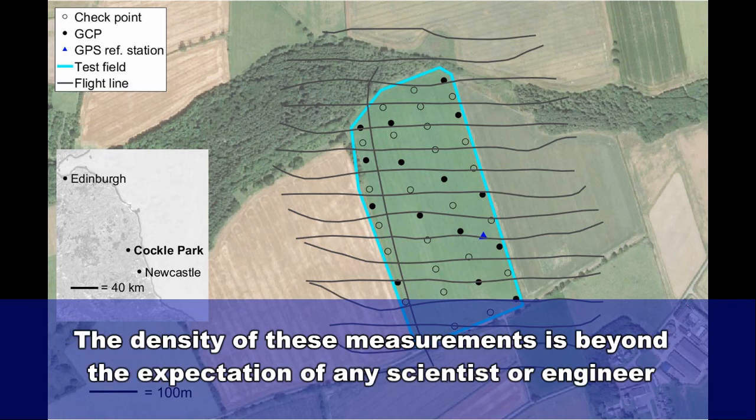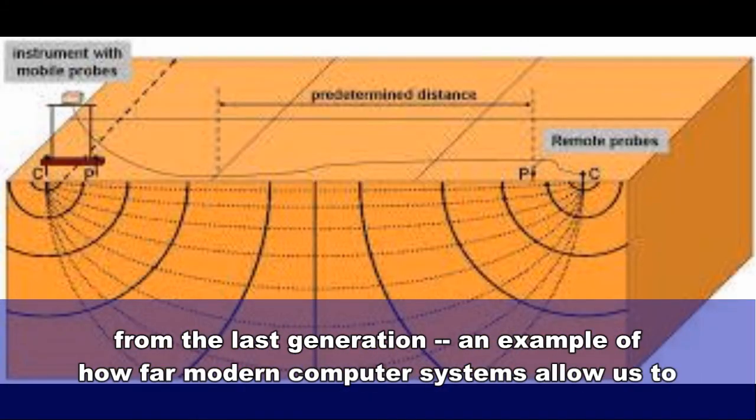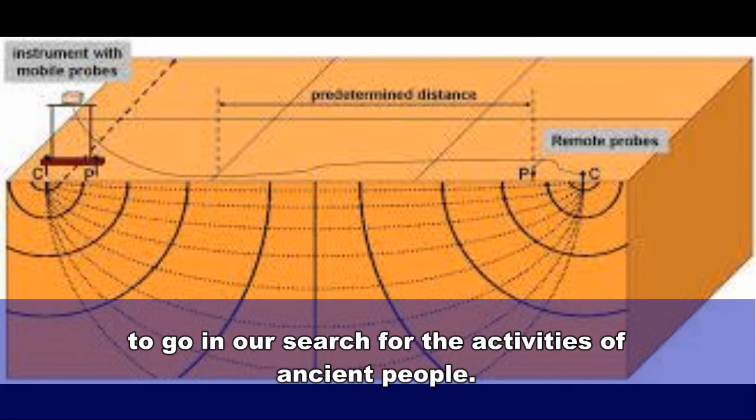The density of these measurements is beyond the expectation of any scientist or engineer from the last generation, an example of how far modern computer systems allow us to go in our search for the activities of ancient people.